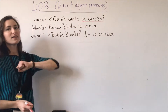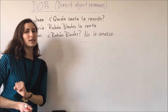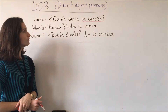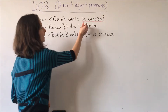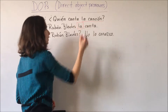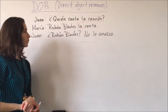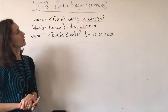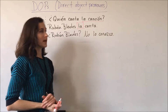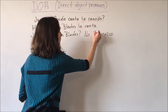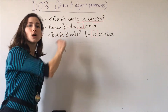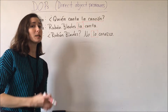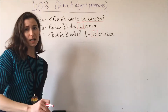We refer to la canción in the second sentence, but we do not say la canción — we say la instead: Rubén Blades la canta. Then we have Rubén Blades no lo conozco — here we also have a direct object pronoun: lo. So la is a direct object pronoun and lo is a direct object pronoun because they replace our noun.